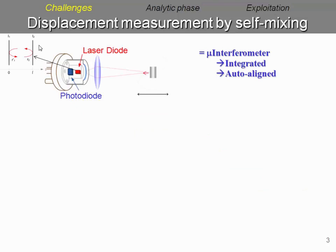Self-mixing has been already explained, so in our context, we are interested in using the basic configuration of self-mixing, just a laser diode and a moving target, which results in an integrated and auto-aligned microinterferometer.